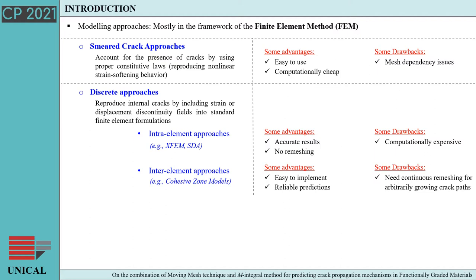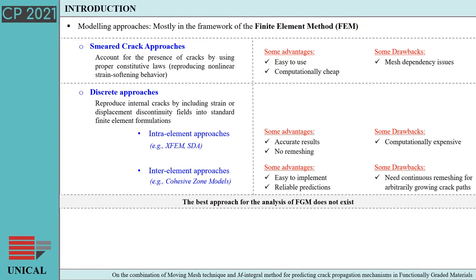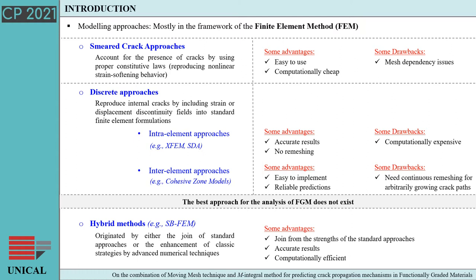These approaches are easy to use and computationally cheap, but they can suffer from mesh dependency issues. Discrete approaches reproduce internal defects including strain or displacement discontinuities into standard finite element formulations, collected through inter-element or intra-element strategies. Inter-element methods provide reliable results but are computationally expensive. Intra-element methods are effective when crack paths can be predicted in advance, but become prohibitive in case of random cracks. We can conclude that these methods have strengths and weaknesses. More recently, new methods arising from the joining of traditional approaches have emerged as an effective tool to analyze fracture behavior of functionally graded materials, ensuring reliable results and excellent computational performance.